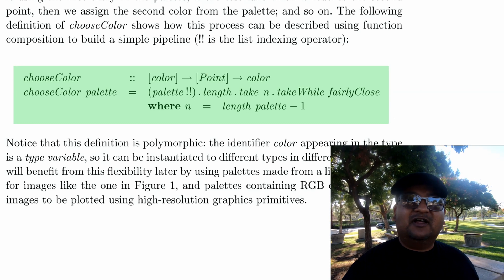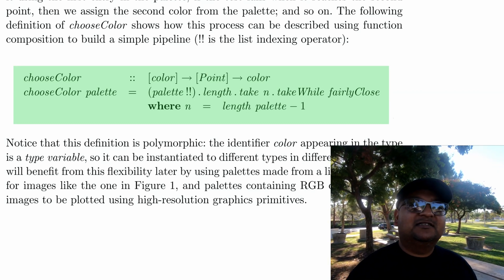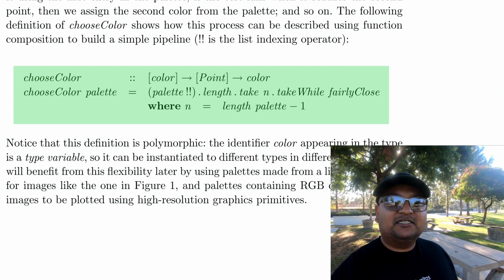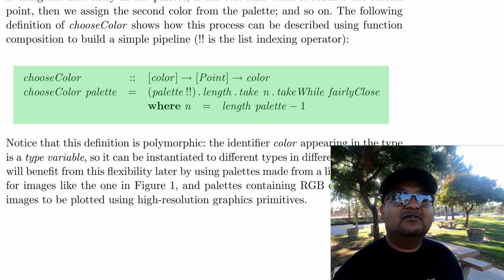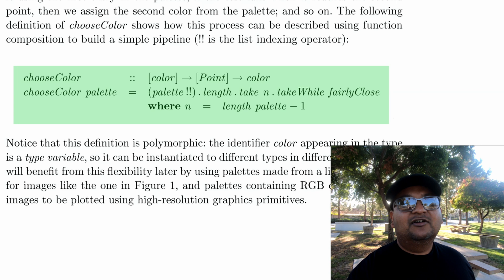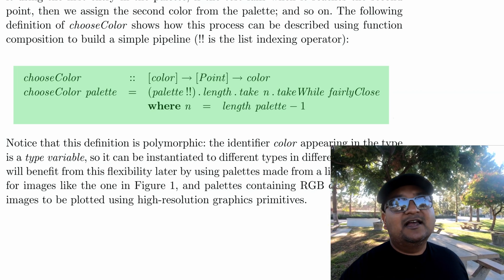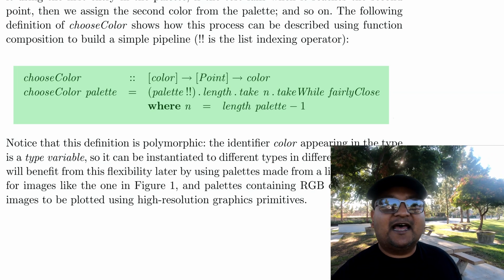So we can take a palette of colors, which is n, which was the same number that we used in our approximation, and see how many steps it takes for these points to escape away from the origin and then assign a color based on that.